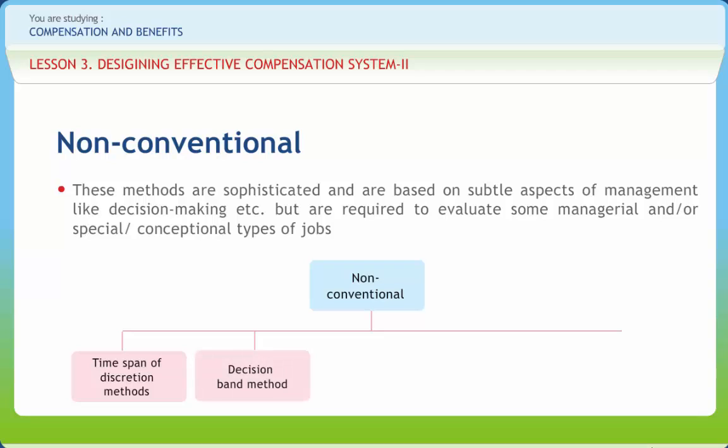In the decision band method, the type of decision to be made by the job is considered and placed in the applicable band. In the direct consensus method, the workman and evaluator reach the value by mutual consensus. Guide chart profile method is for managerial pay. It emphasizes three critical factors: A) Know-how, B) Problem solving, and C) Accountability.